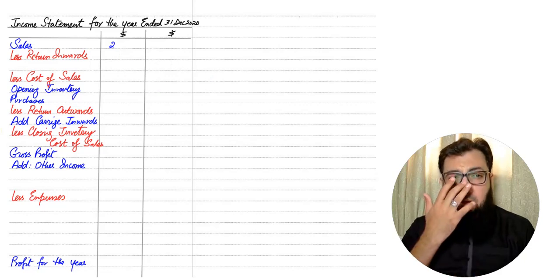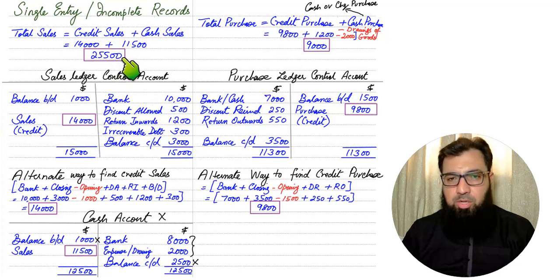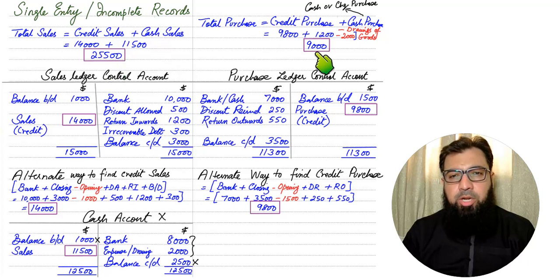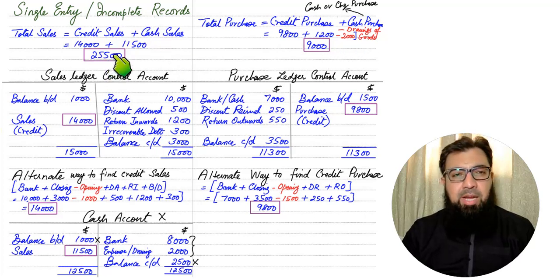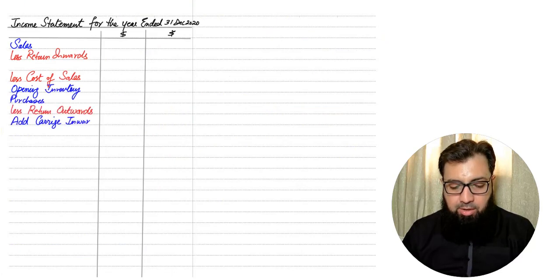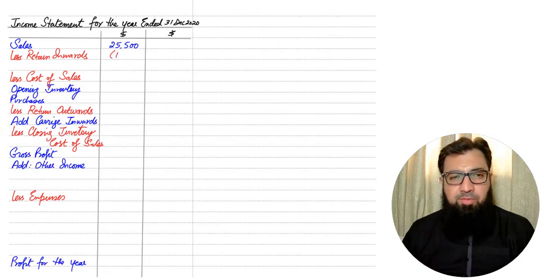The total sales figure we have already calculated in the earlier part of this video is 25,500. The total purchase figure already calculated is 9,000, with drawings of goods already deducted. You need to watch part one for single entry sales and part two for credit purchases. We have already calculated both the sales and purchase figures.